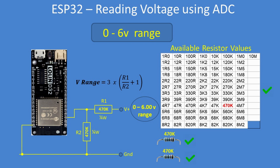Here are pre-calculated ranges for common voltage targets. For 0 to 6 volts: two 470k resistors. For 0 to 12 volts: a 470k and a 150k, giving an actual range of 12.4 volts. For 0 to 15 volts: a 470k and a 100k, actual range 0 to 17.1 volts. For 0 to 24 volts: a 470k and a 56k, actual range 0 to 28.1 volts. For 0 to 30 volts: a 470k and a 47k, actual range 0 to 33 volts.